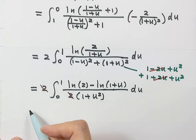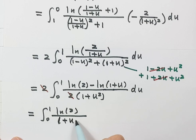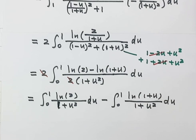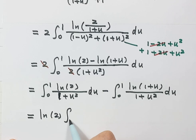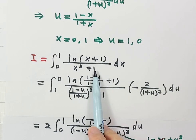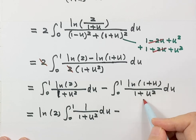We can now separate the log into two parts and split the integral into two parts. The first part has log 2 over (1+u²), and the second part has log(1+u) over (1+u²). The constant log 2 comes outside, leaving the integral of 1/(1+u²) du. The second integral — from 0 to 1 of log(1+u)/(1+u²) du — is just the original integral I.